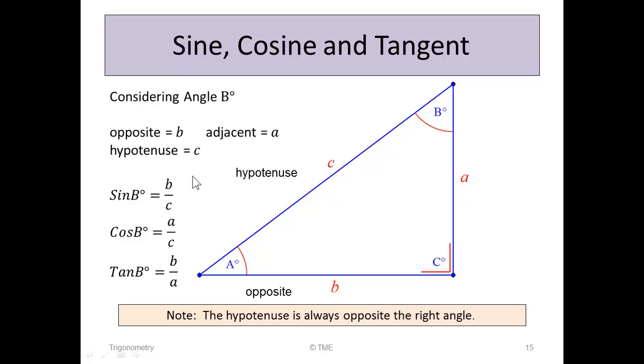The opposite and the adjacent depend on your angle of focus. The hypotenuse will always be opposite the 90-degree angle.